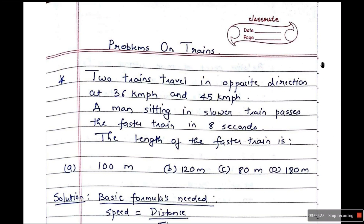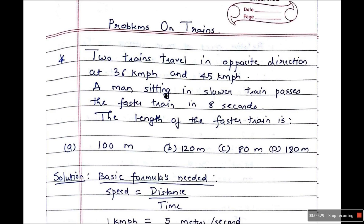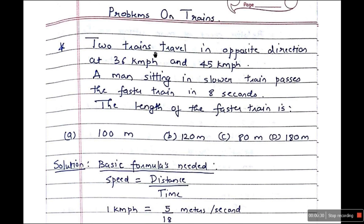Problems on trains. So first problem is: two trains travel in opposite directions at 36 km per hour and 45 km per hour. A man sitting in the slower train passes the faster train in 8 seconds. The length of the faster train is — four options: A) 100 meters, B) 120 meters, C) 80 meters, and D) 180 meters.